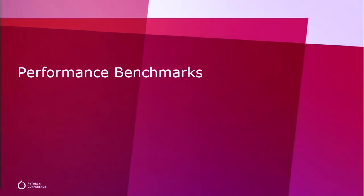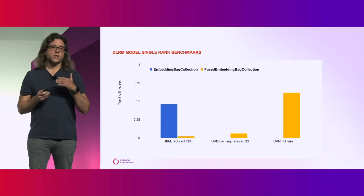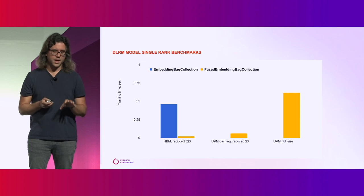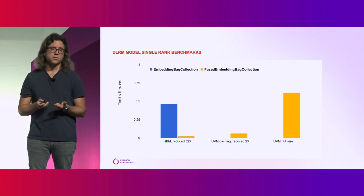Okay, performance benchmarks. We're going to look at two things: single GPU and multi-GPU. For the single GPU case, the first blue bar is what it looks like using the standard embedding bag collection — a lightweight wrapper around PyTorch's built-in NN embedding bag. As soon as you shard this, we swap it out with our customized module containing highly optimized FBGEMM OSS kernels, which enable table-batched embeddings and optimizer fusion. The net result from a training loop is typically a 32x improvement.